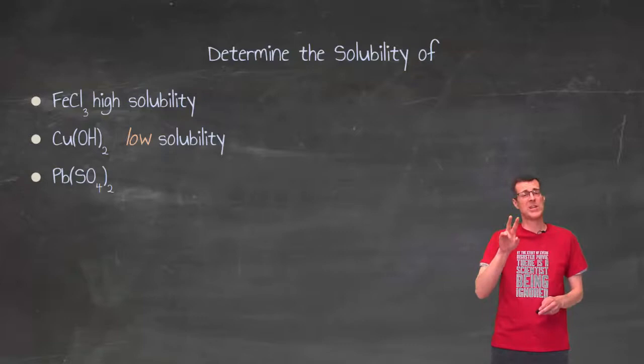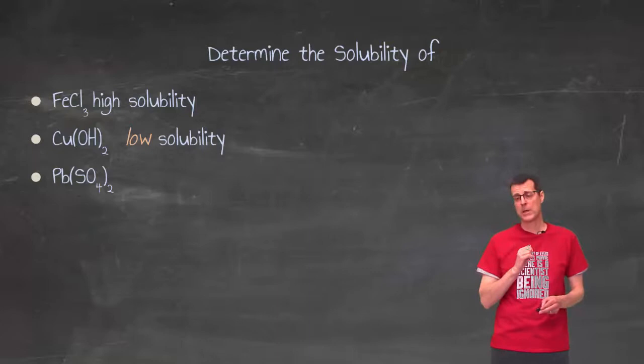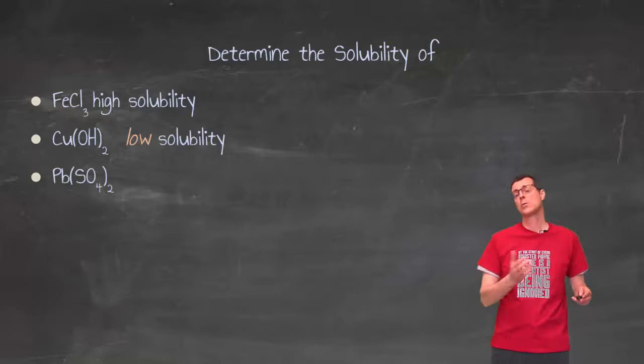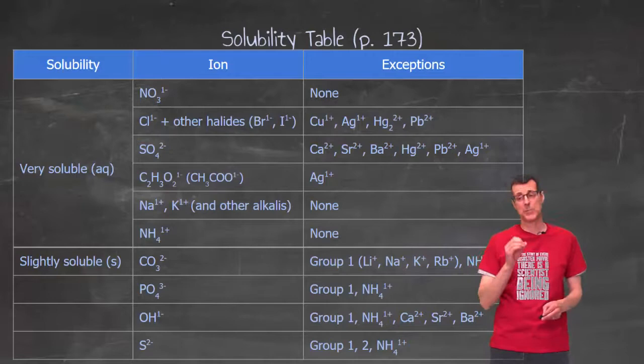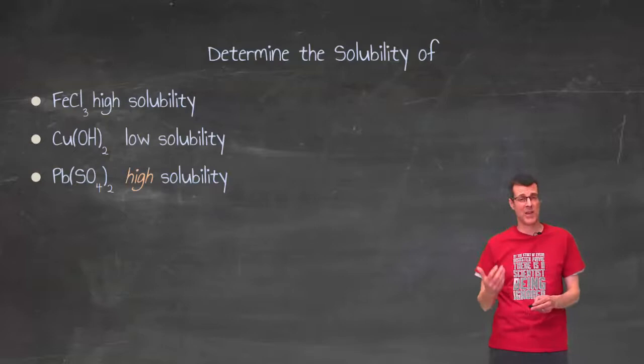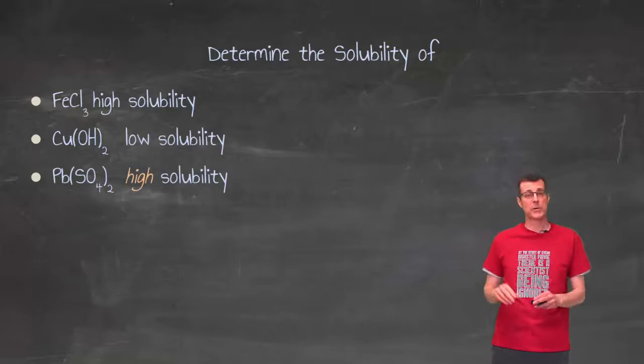So if each SO4 is a minus 2, and I've got two of them, minus 4 is total, which means my Pb is plus 4 total. That Pb, that lead ion, is a plus 2. So following the table as it stands, I would actually have to say that that one shows high solubility. Might be a bit of a weird thing with the table, but that's how I would have to do it.